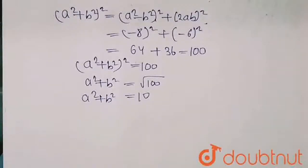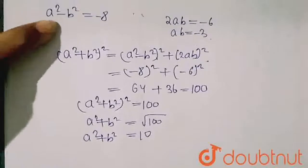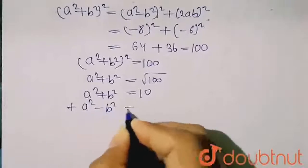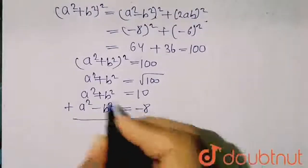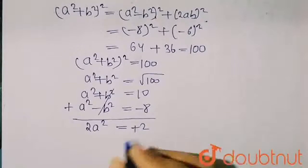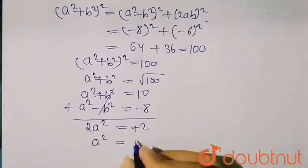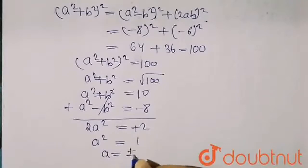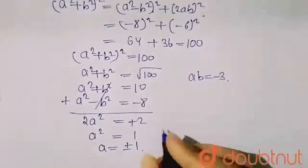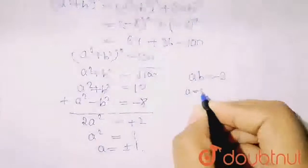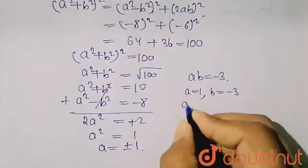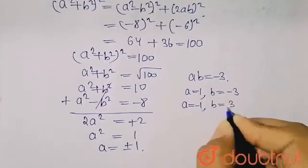Now the other equation is A squared minus B squared equals minus 8. Adding this to A squared plus B squared equals 10, the B squared terms cancel and I get 2A squared equals 2, so A squared equals 1, meaning A equals plus or minus 1. And since AB equals minus 3: when A equals 1, B equals minus 3, and when A equals minus 1, B equals plus 3.